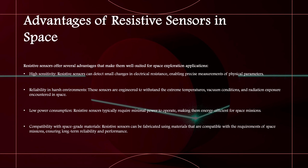Now we are going to discuss the advantages of resistive sensors in space. They offer several advantages that make them well-suited for space applications. They exhibit high sensitivity and accuracy, enabling precise measurement of physical parameters in the challenging environment of space. Moreover, resistive sensors demonstrate reliability in harsh conditions, withstanding extreme temperatures, vacuum conditions, and radiation exposure. Their low power consumption makes them energy efficient for long-duration space missions, and their compatibility with space-grade materials ensures long-term reliability and performance.